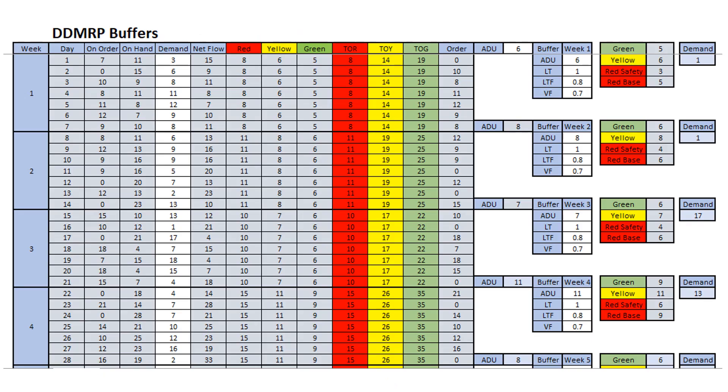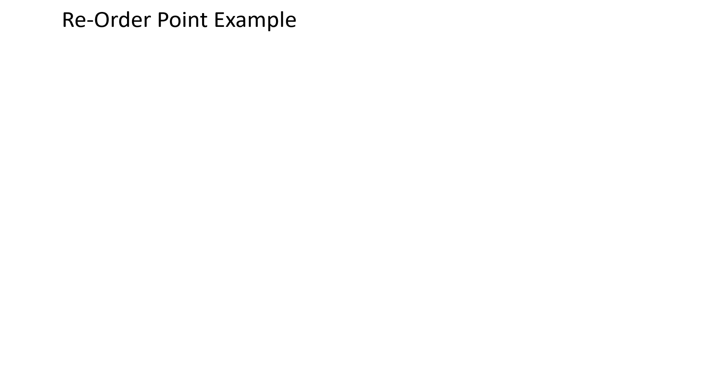This is the spreadsheet for the DDMRP simulation, which we will go through in more detail later. Let's have a look at the reorder point example.